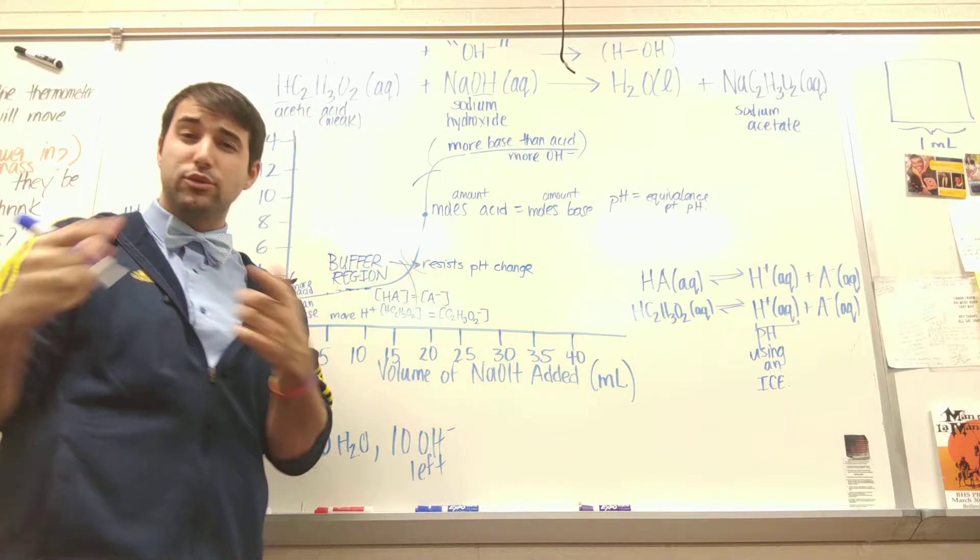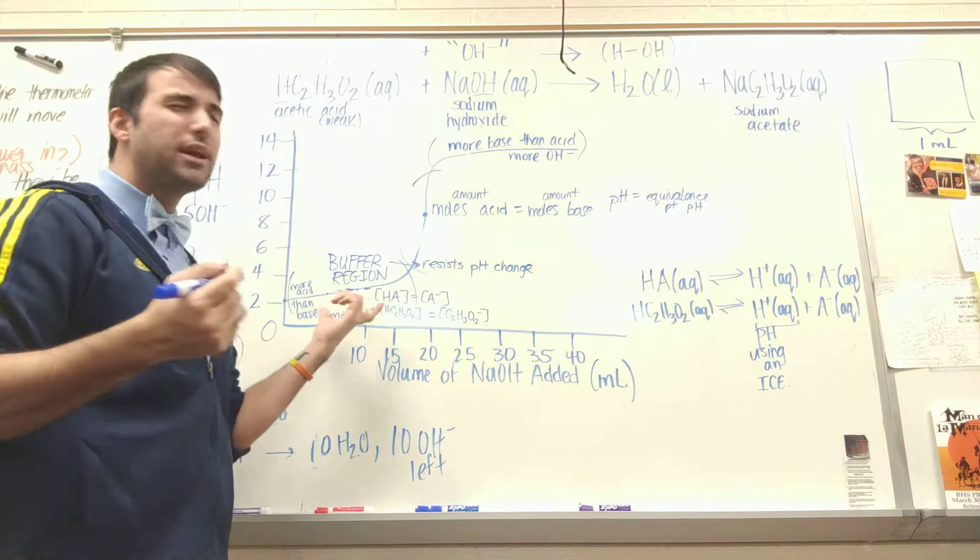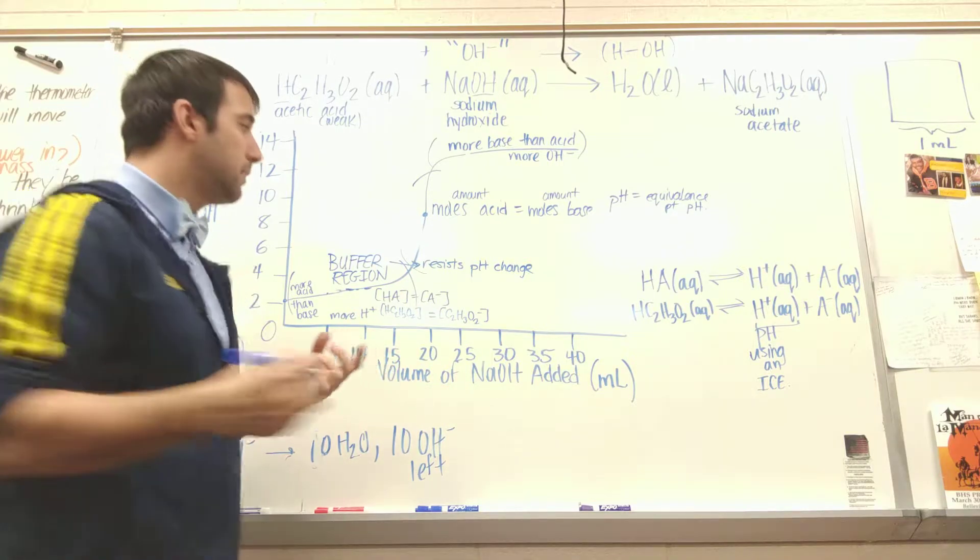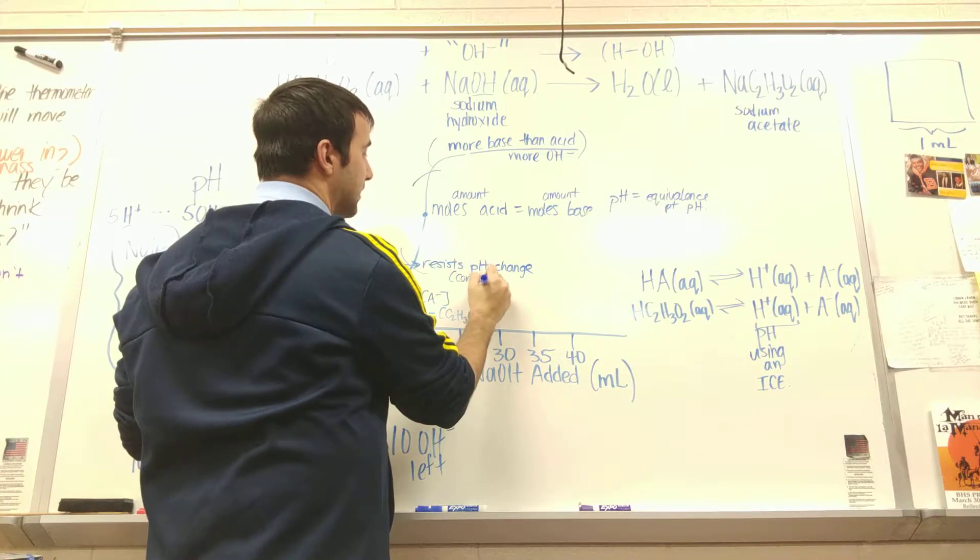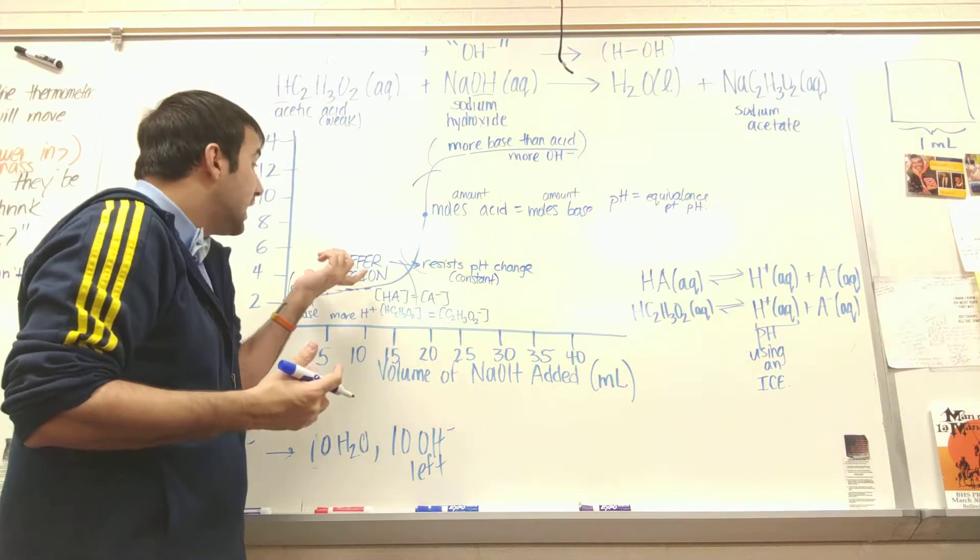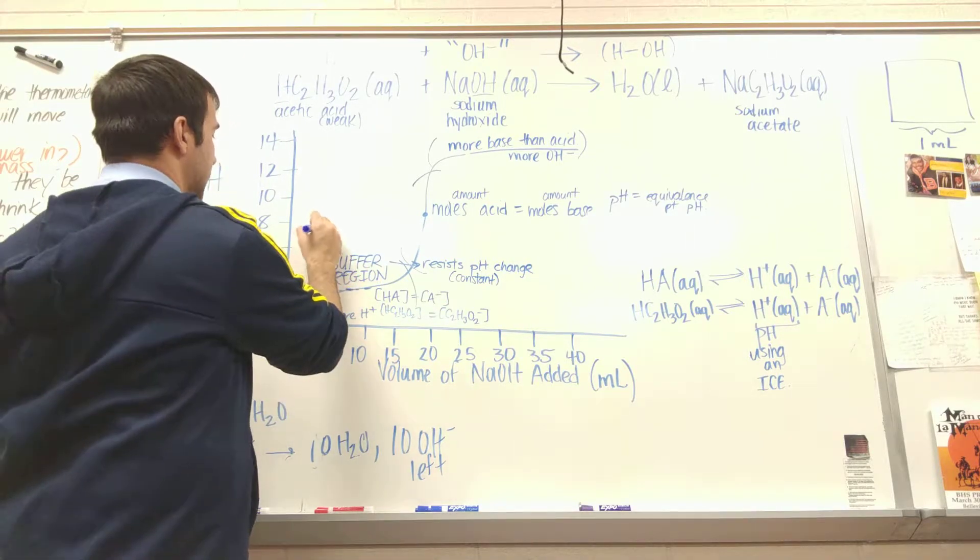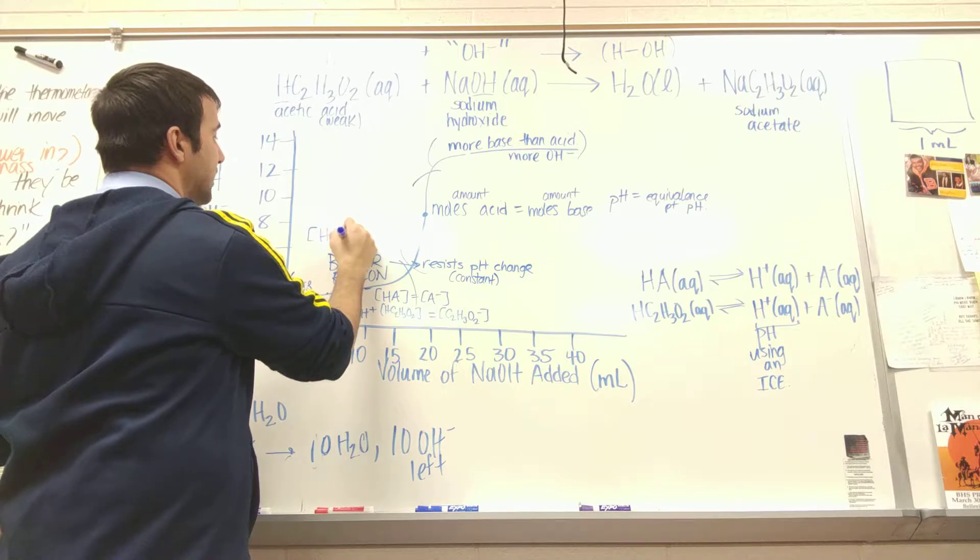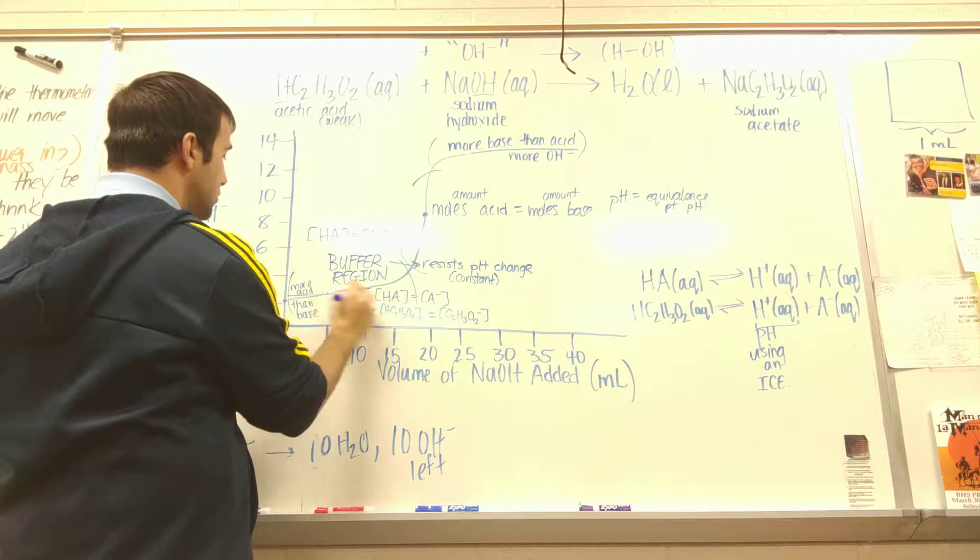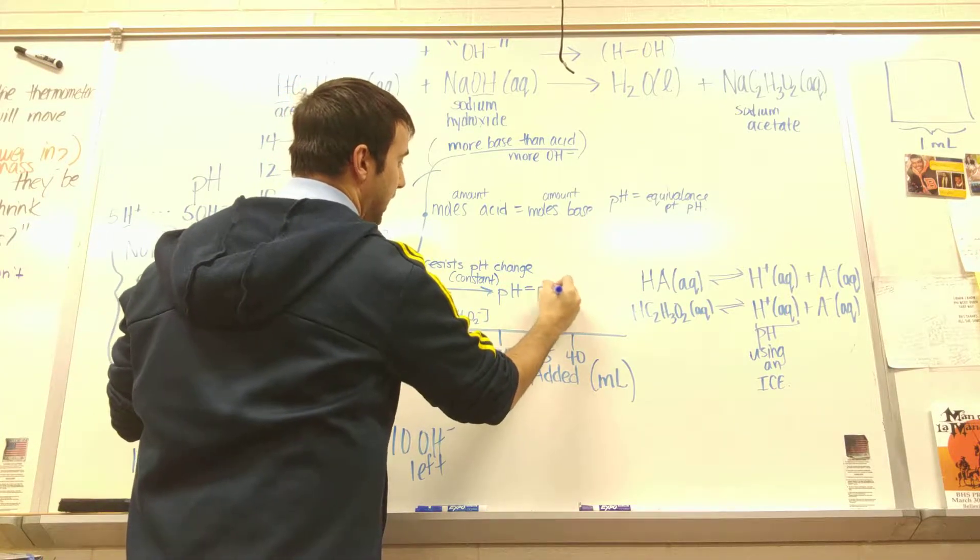And so graphically, and all of you should be pretty good at interpreting and reading graphs, graphically, how can I show a resistance to change? Well, a resistance to change means constant. And our body does this. Our body has to stay at some sort of constant pH, or we die, or we get sick. So I have a constant pH here, or it's kind of not changing as much. And this is known as my buffer region. And that's when my HA is equal to my A- in concentration. And this range right here, whatever the pH is at this range, this pH is equal to PKA.